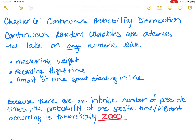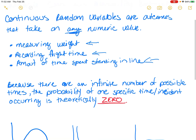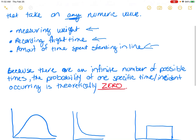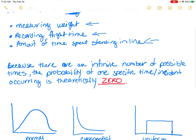In this chapter, in terms of measuring, it would be measuring weight, recording flight time, or the amount of time that someone would spend standing in line. These are all things that can be measured and can take on any numeric value, and there's an infinite number of possibilities of what the measurement could be.